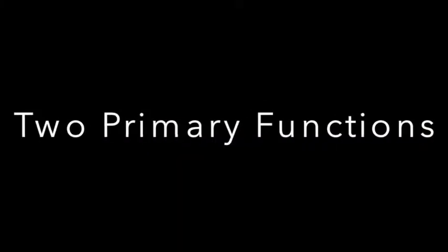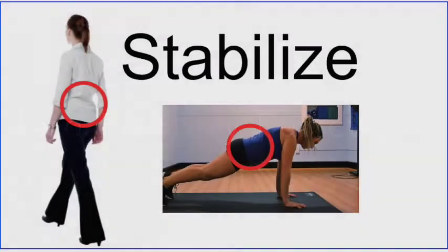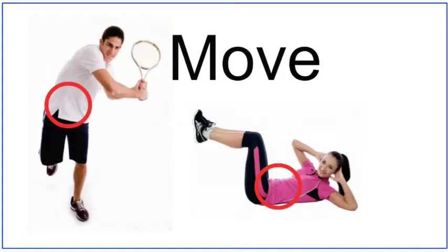Muscles of the spine have two primary functions. First, they function to stabilize the pelvis and spine throughout the day when standing and sitting with good posture, and also when exercising. They also function to move the pelvis and spine, such as during a tennis swing or a basic abdominal crunch.